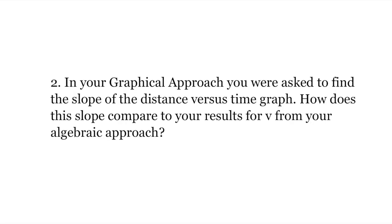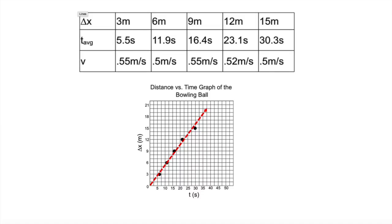Data analysis question 2: In your graphical approach, you were asked to find the slope of the distance versus time graph. How does the slope compare to your results from V from your algebraic approach? The average velocity from the algebraic approach is approximately 0.5 meters per second, which is the approximate slope of the best fit line. Therefore, both the algebraic and graphical methods are conclusive of an approximate constant velocity of 0.5 meters per second.